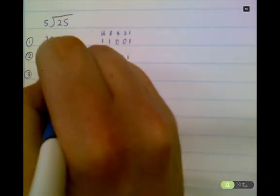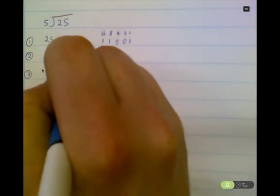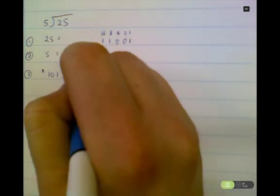My third step is to start my division. So I have 1, 0, 1 divided by 1, 0, 0, 1. So 25 divided by 5 in its binary form.